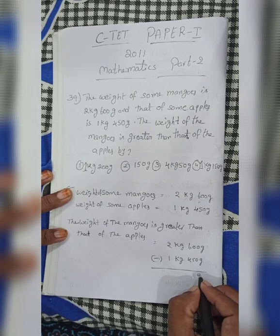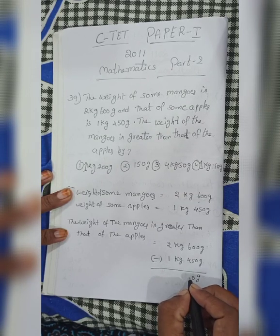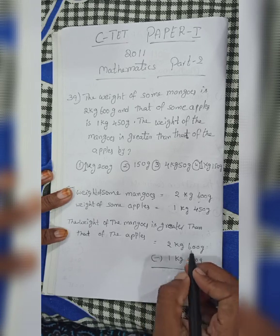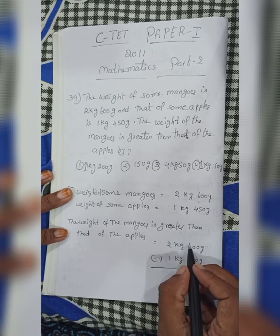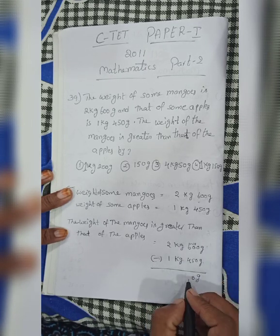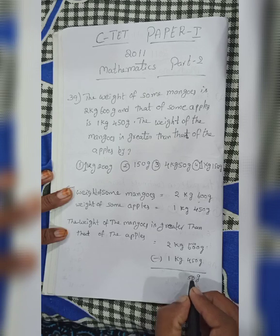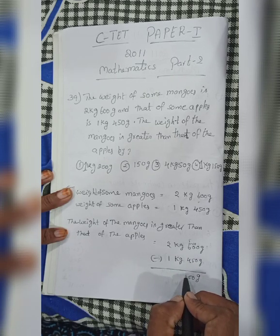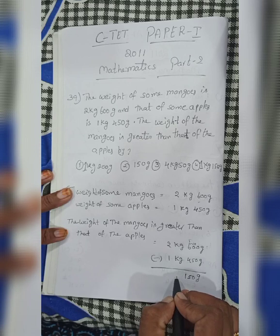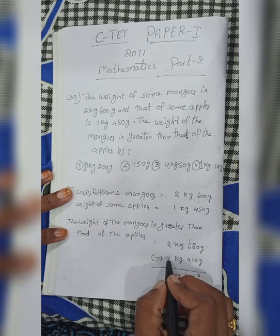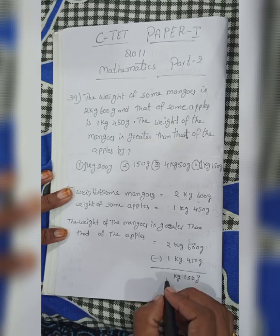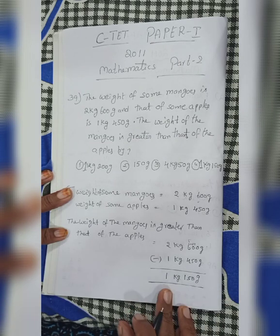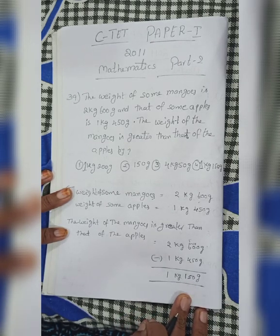Now, 0 minus 5 — borrowing 10, gives 5. 5 minus 1 is 4. Then 2 minus 1 is 1. The answer is 1 kg 150 grams.